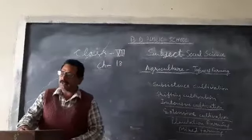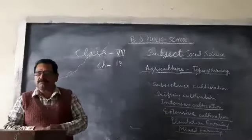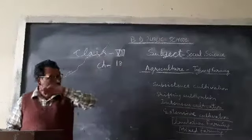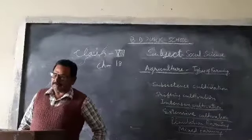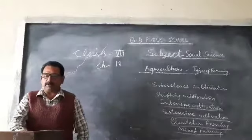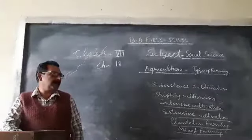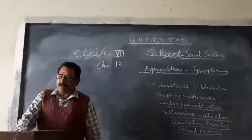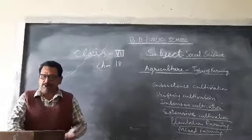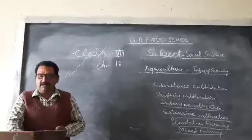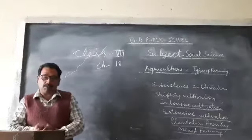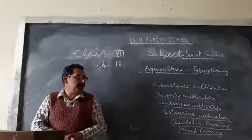Good morning students. Today we will start chapter number 18: Agriculture, types of farming. The types of farming practices in a particular region are influenced by factors such as soil, humidity of water, temperature, humidity, and slope of the land. This is because different types of crops grow in different climatic conditions.